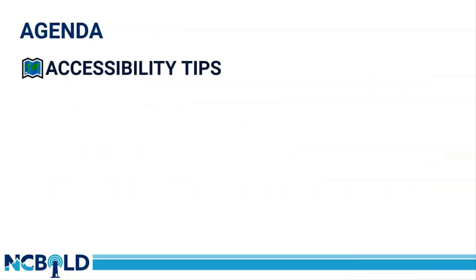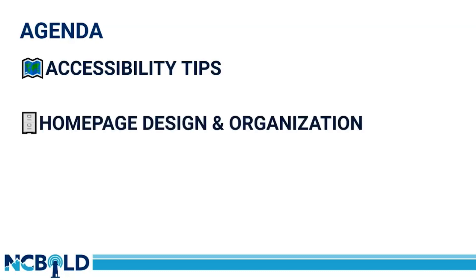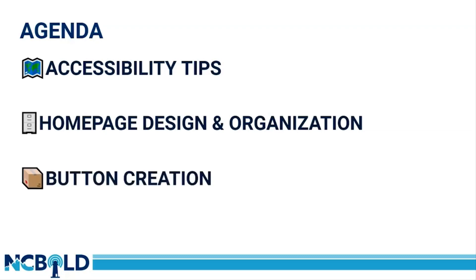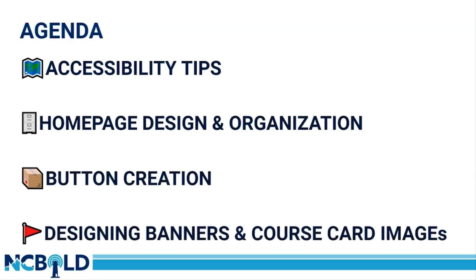The agenda is as follows: we're first going to look at accessibility tips and what's the point of using buttons on a homepage — what are the advantages? Then we'll look at homepage design and organization: what fits your style, and how you want to organize your homepage for your students. Then we'll look at button creation — there are so many different types that take all shapes and sizes. And finally, we're going to design banners and course card images within your Canvas course.